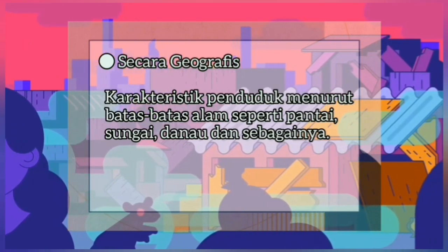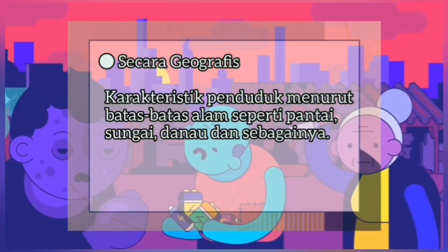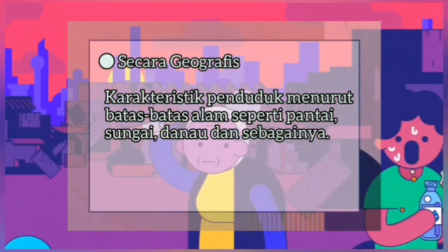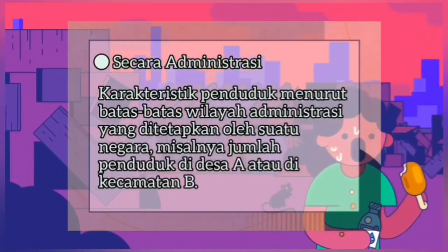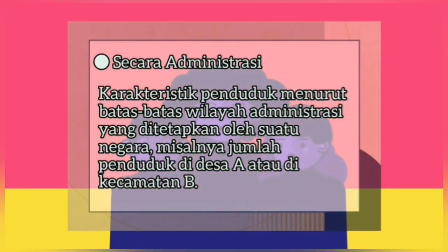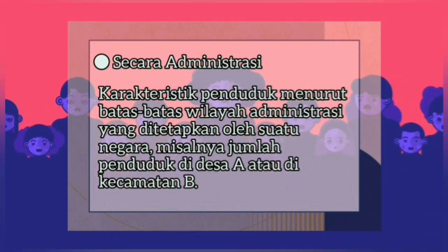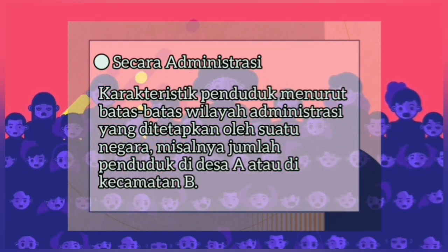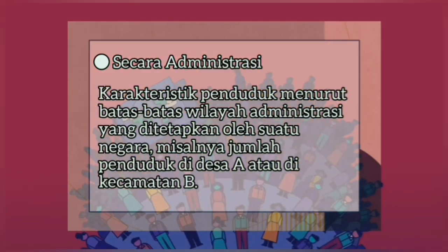Secara biografis, persebaran penduduk adalah karakteristik penduduk menurut batasan-batasan alam seperti pantai, sungai, dan danau. Yang ketiga secara administrasi, yakni karakteristik penduduk menurut batas-batas wilayah administrasi yang ditetapkan oleh suatu negara, misalnya jumlah penduduk di desa A atau di kecamatan B.